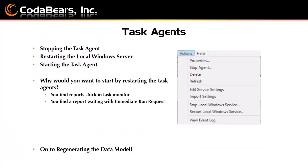For task agents, once you're in the task agent configuration you can either stop each task individually, or — which is generally better — just restart the local service, especially if prod and test are not in use. This restarts them all at once instead of one by one. Signs that you need to restart task agents include reports stuck in task monitor or reports sitting with an immediate run request.